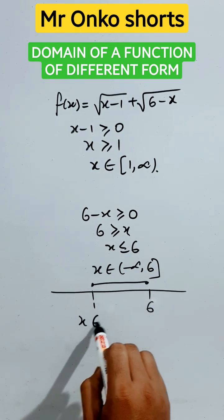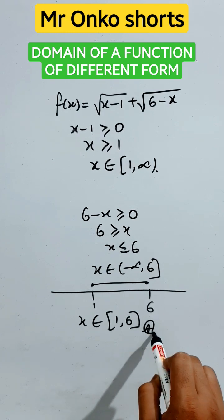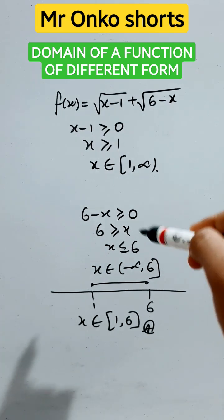So x belongs to the domain will be closed one to six. That's our given answer for this question. Thus you can find it.